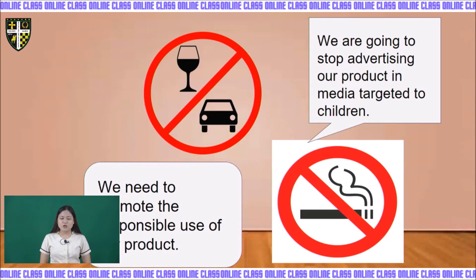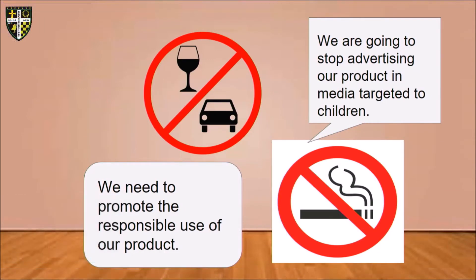Another example: companies stop advertising their product in media targeted to children — such as smoking or cigarettes — and promote responsible use of their product instead. Another example of demarketing is the efforts of Tata Group. Since the demand for Tata Nano far outweighed the supply, Tata Group completely stopped the promotion of Tata Nano and started promoting other products by the Tata Group. Similarly, customers were discouraged by Maruti from buying the Maruti Stelo and directed instead toward the recently launched Maruti A-Star.